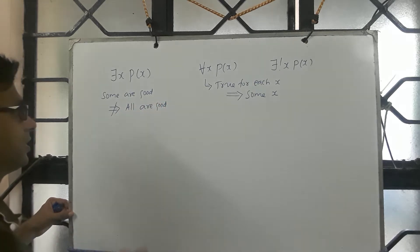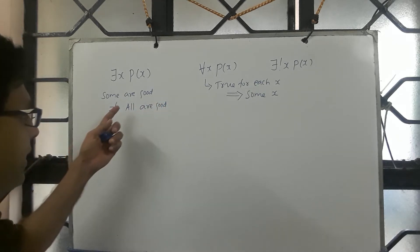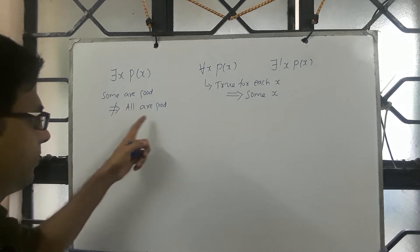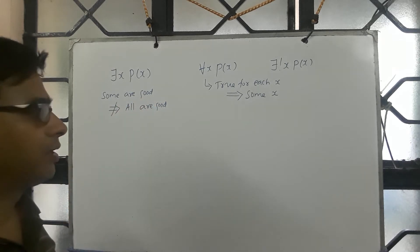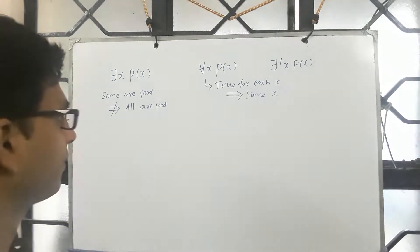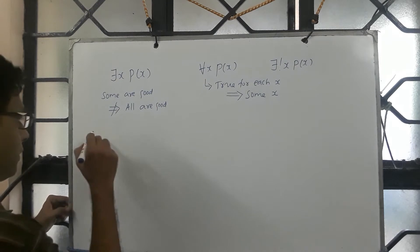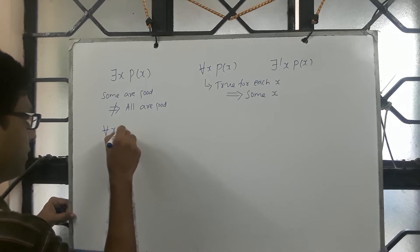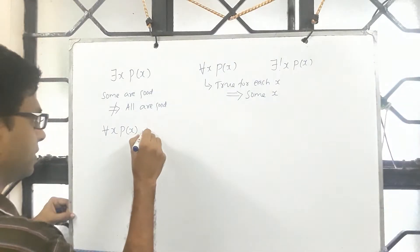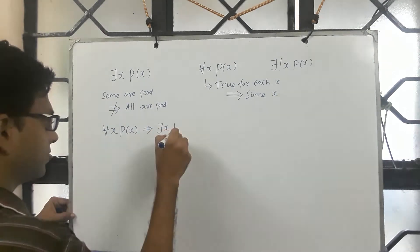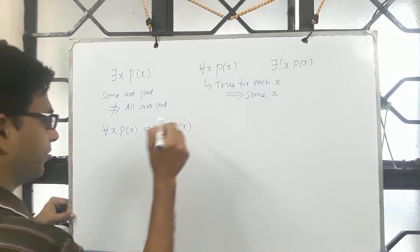If I say some boys are good, it may be the case that some are good, some are bad, and this does not imply all x satisfy p of x, or all boys are good. So this means we get the identity: for all x p of x implies there exist x p of x.